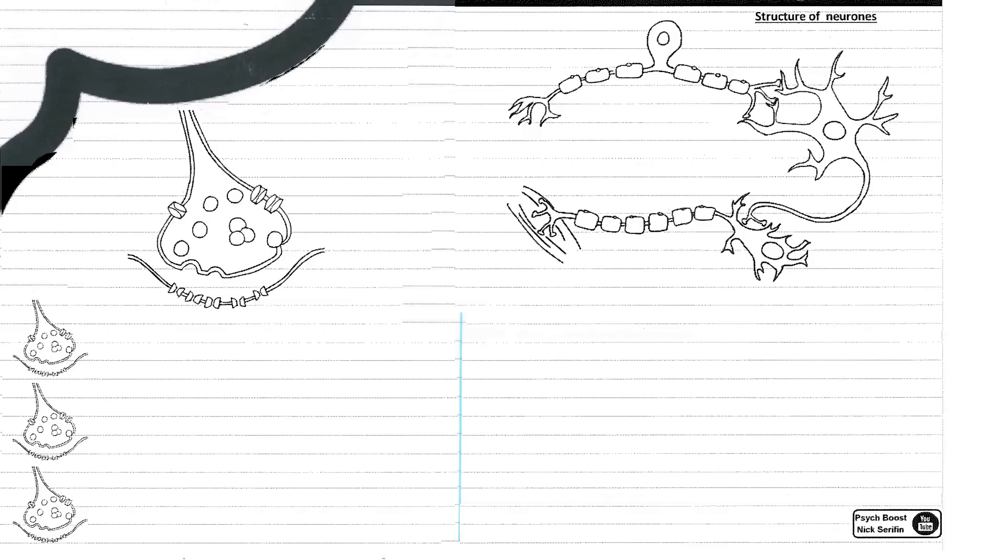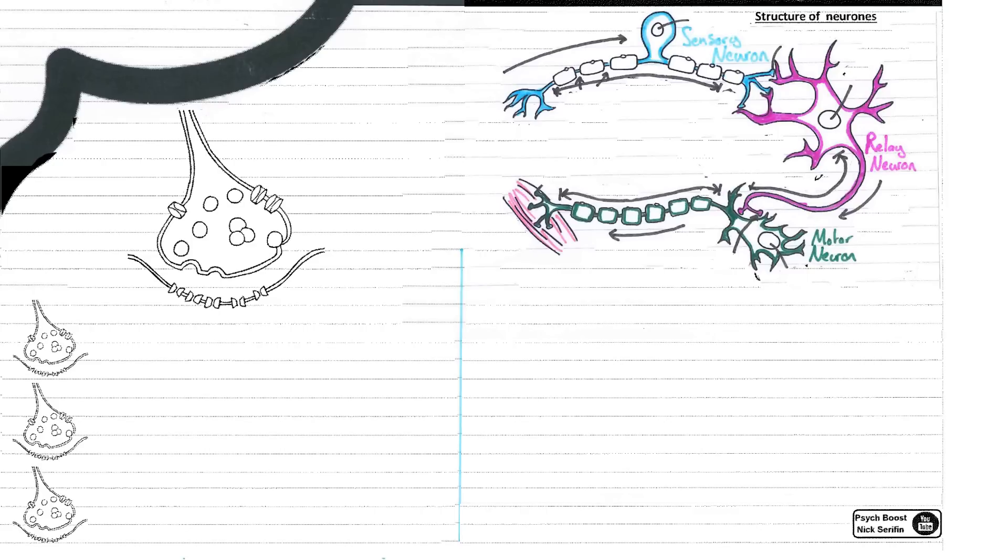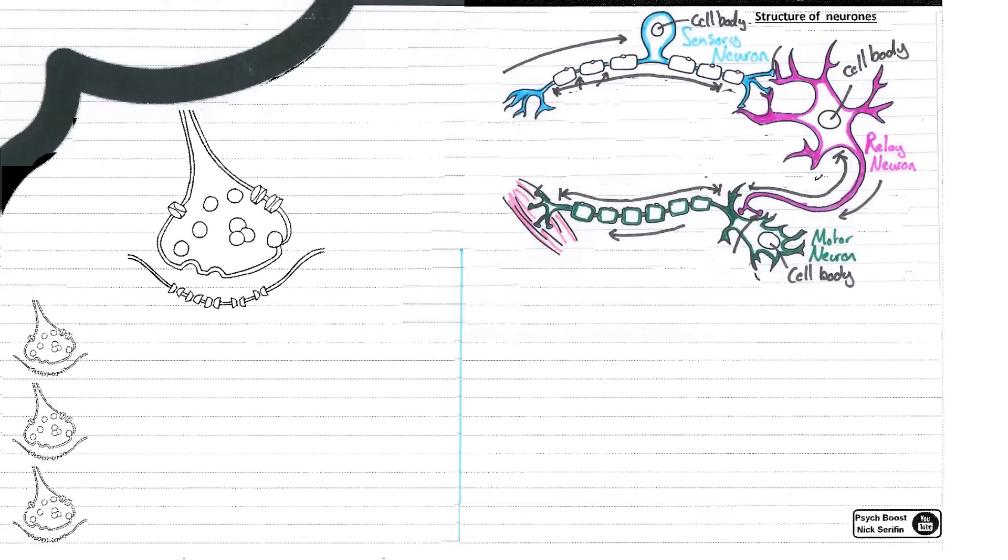So here it is empty. First thing I suggest you do is on the right hand side - this is a reflex arc. Maybe color it in and label it up just as I have. So we've got three separate neurons: a sensory neuron, a relay neuron, and a motor neuron. I've done one blue, one purple, one green, and then labeled them up as well.